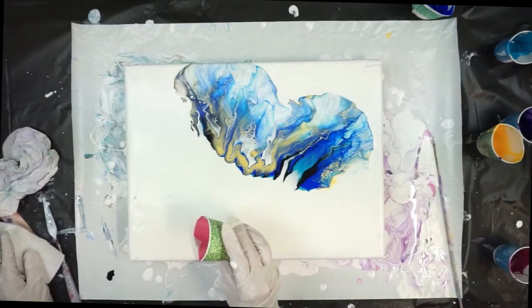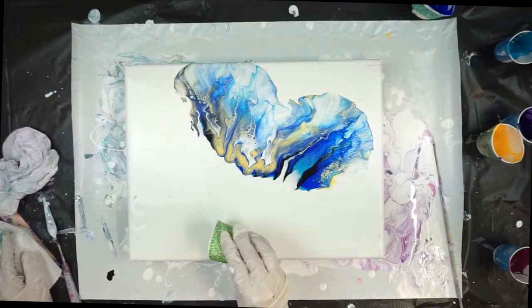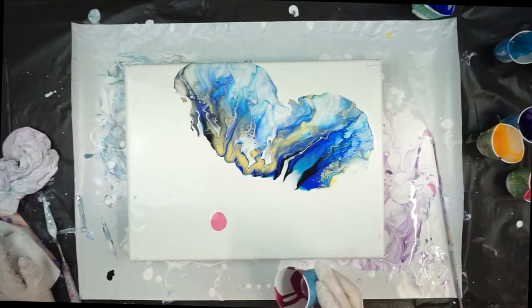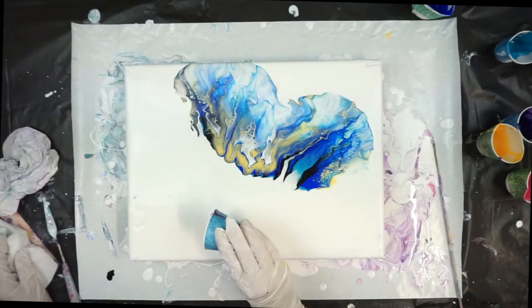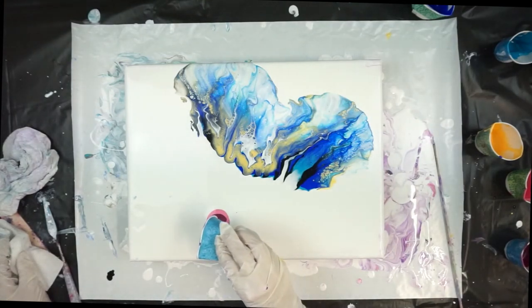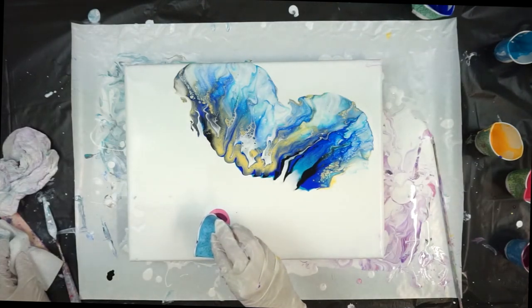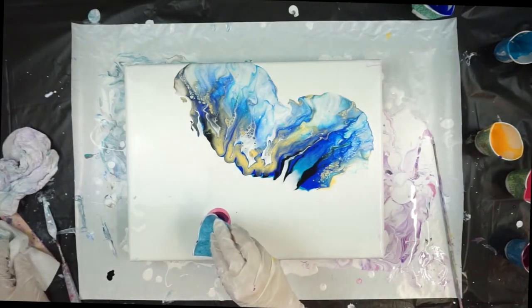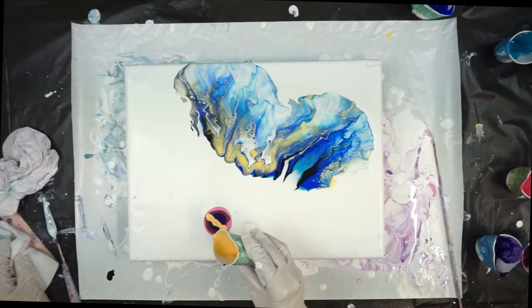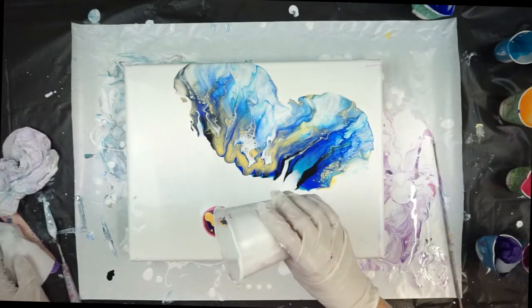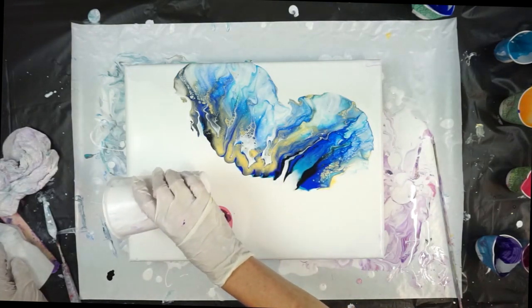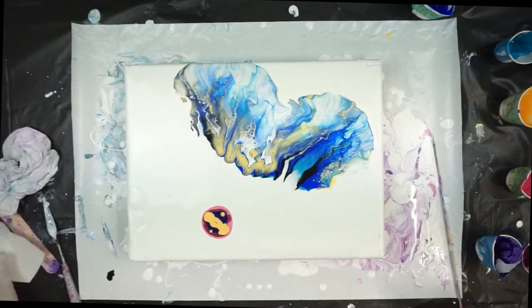Then we can put a flower down here. I'll find my dioxazine purple. Put some over here. A little messy edge.